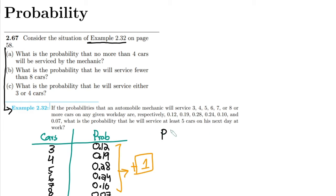In this example I have to find out the probability that he will service at least 5 cars on the next day. The cars should be greater or equal to 5, or it can also be 1 minus probability that he will service cars less than 5.